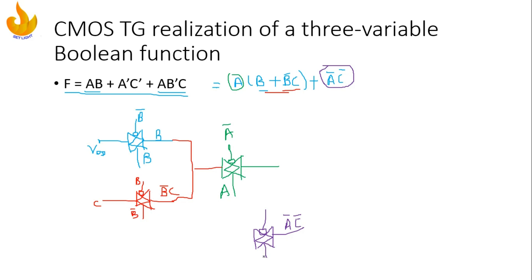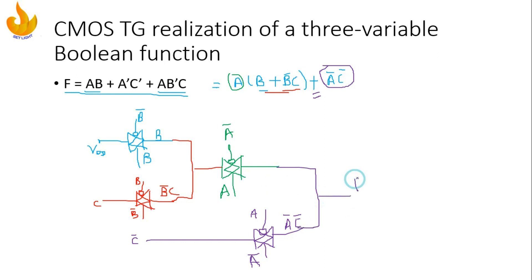For ĀC̄, we place Ā at the control input and C̄ as the signal. If Ā is on one side, then A is on the other. Since there is an addition or OR sign, we again join this in parallel with the previous term. The parallel connection results in F = AB + ĀC̄ + AB̄C. This is how you can design CMOS transmission gates.